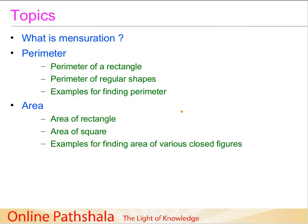We will also take quite a few examples to find out the perimeter of various geometric objects. The second concept we will discuss is that of area — what do we mean by area, why is it important, and how to calculate the area of a rectangle and the area of a square. We will also take several examples to find out the area of various closed figures.